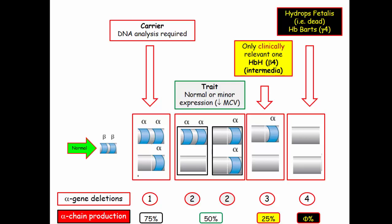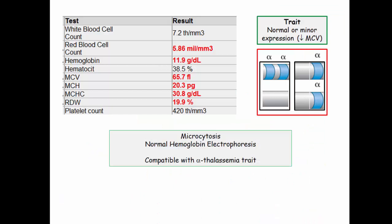One deletion is not clinically detectable. Two deletions characterize the trait. Three deletions give rise to hemoglobin H, made up of four beta chains. Four deletions is incompatible with life, characterized by hydrops fetalis and hemoglobin Barts, composed of four gamma chains. So what was the diagnosis in our patient? Microcytosis with a normal hemoglobin electrophoresis and a minor anemia is most compatible with alpha thalassemia trait.